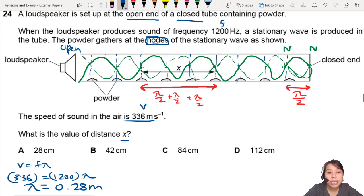And that's not the answer. Don't get very happy. Yay, 28 cm. No, no, no, no. We want distance x, and x is 3 loops. 3 loops is 3 times lambda over 2.